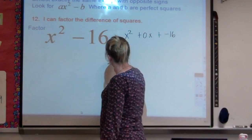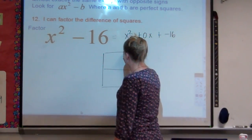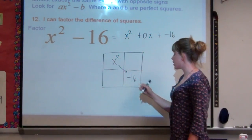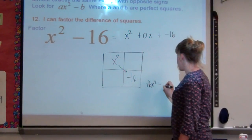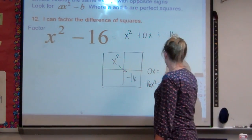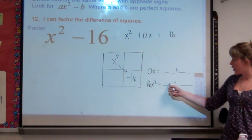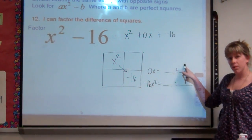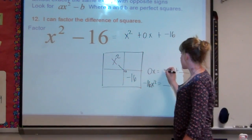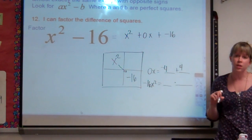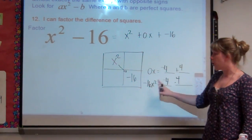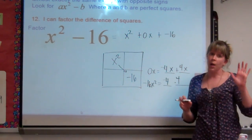We go ahead and draw our box. x squared goes here, negative 16 goes here, and we multiply diagonally: x squared times negative 16 is negative 16x squared. So I'm finding two numbers that multiply to give me negative 16x squared but add to give me 0. Any time numbers add to give you 0, they are the exact same number — one positive, one negative. For example, negative 4 and positive 4: when added they give 0, and when multiplied they give negative 16. So it works — it's always the same number, just positive and negative.